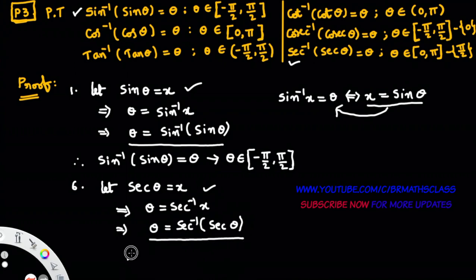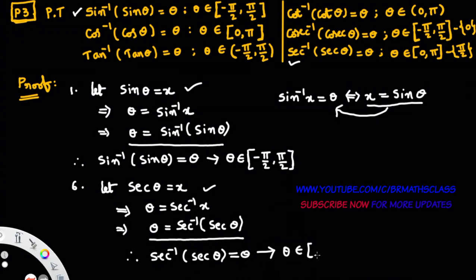We have proved it. Therefore, secant inverse of secant theta equals theta. The point is, this result holds good only when theta belongs to the closed interval [0, π] minus the singleton set {π/2}. The proof of this result is very easy, and this property is very, very important. Most of the time while doing problems, we use this property.